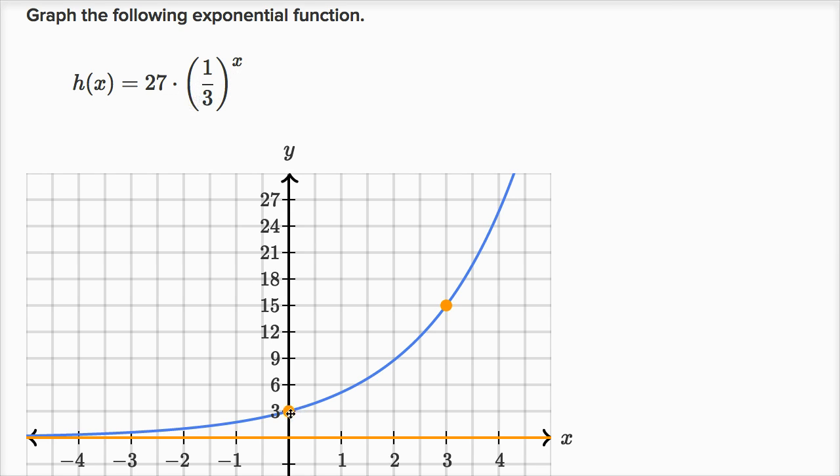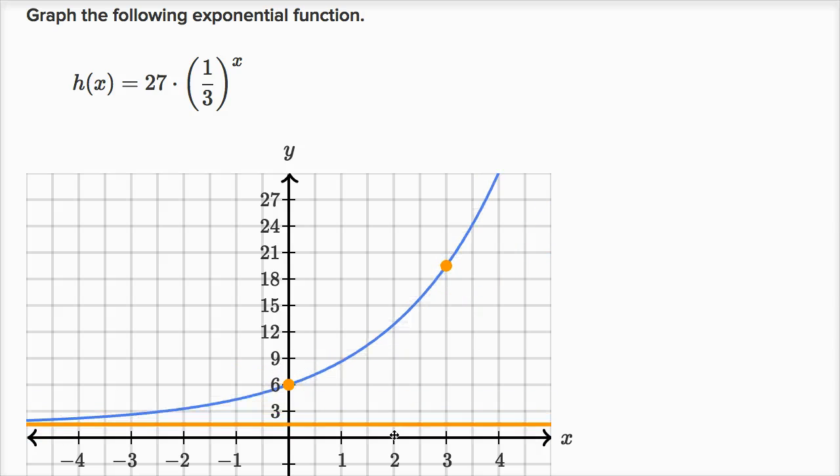They give us this graphing tool where we can define these two points, and we can also define a horizontal asymptote to construct our function. These three things are enough to graph an exponential if we know that it is an exponential function.